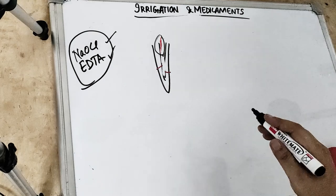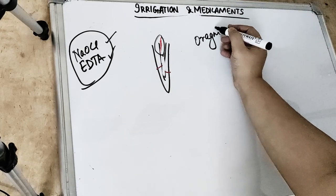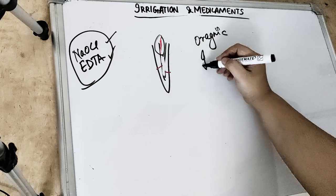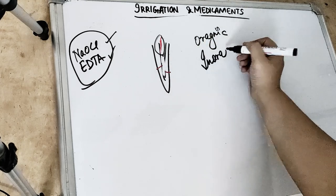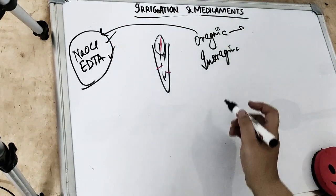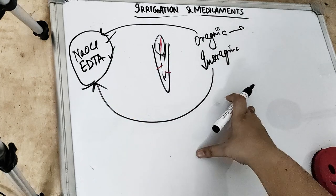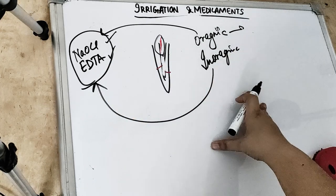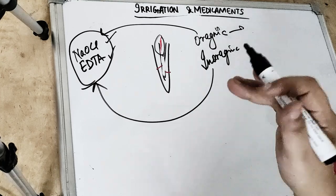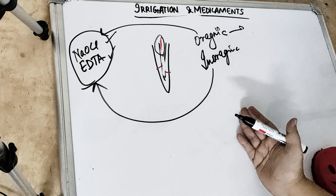We have to dissolve two materials. One is the organic material which is present in the canal and another is the inorganic material. Organic material is removed by sodium hypochlorite. The inorganic material is dissolved by EDTA. So EDTA actually works as a chelating agent. It binds to the calcium, it dissolves all of the inorganic material and thereby it removes the smear layer.